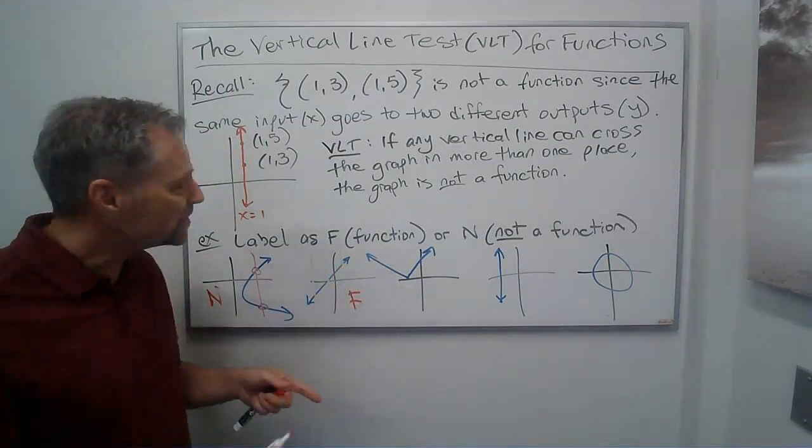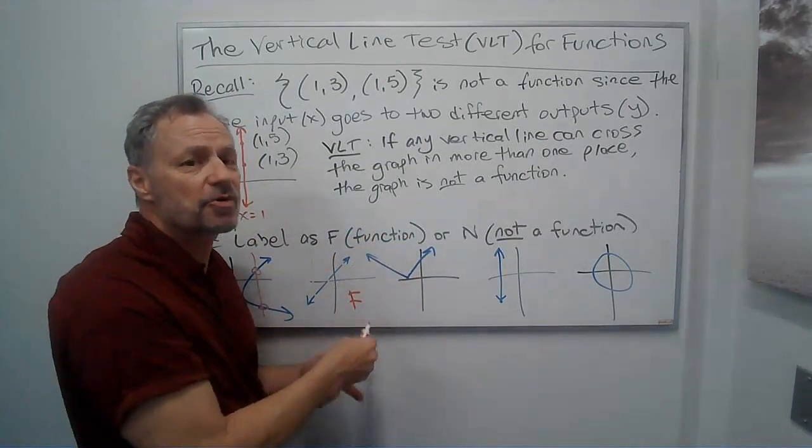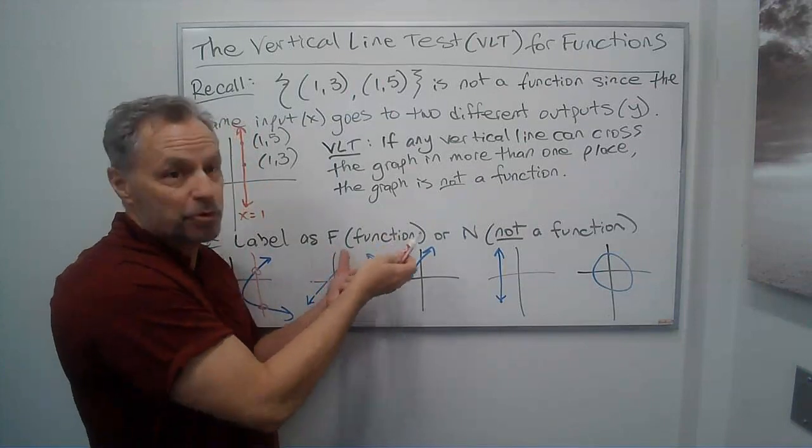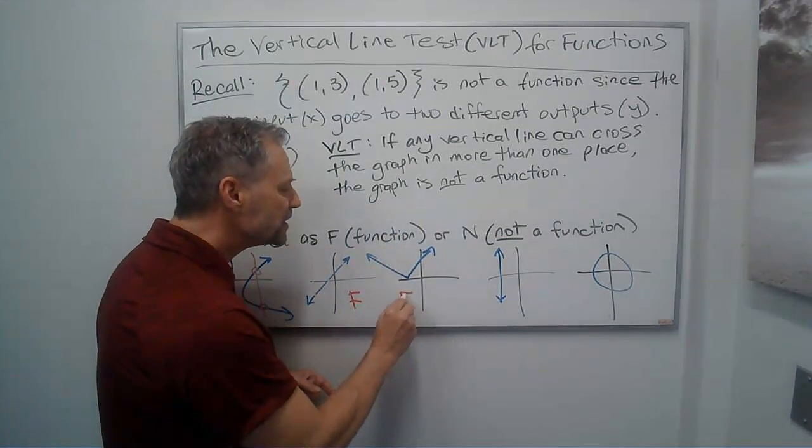Let's go to the next one. Same thing. Any vertical line I draw is only going to cross the graph in at most one place. Again, this one is a function.